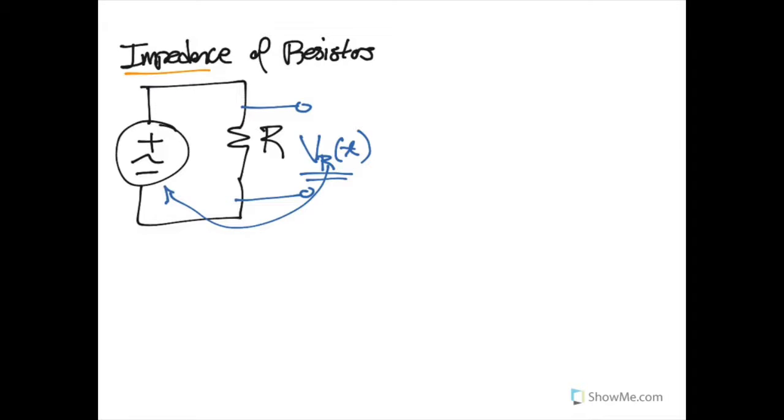And in the same way that there is a voltage running across this resistor, there is also going to be some sort of current flowing through this resistor. And because our source is a function of time, our current is also going to be a function of time as well.